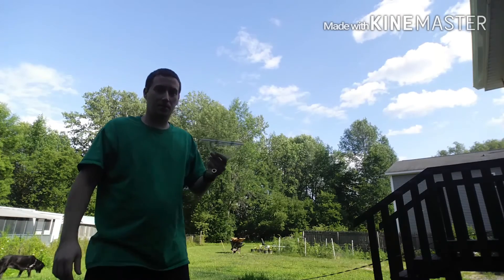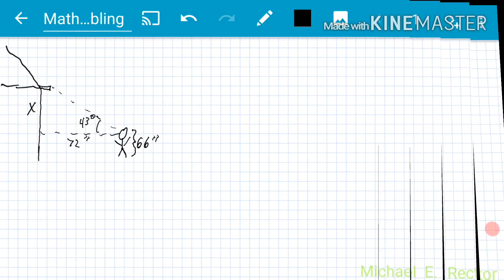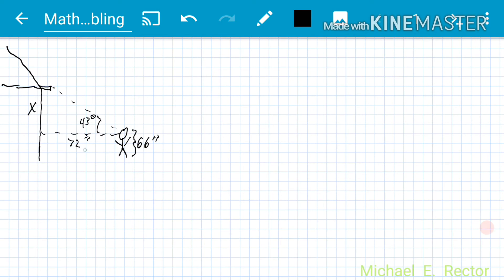So let's do the math and see how close we are to the actual height. Since I was standing 72 inches away and I took a degree measurement of 43 degrees, let's use tangent again to figure out the height of the rain gutter off the ground.